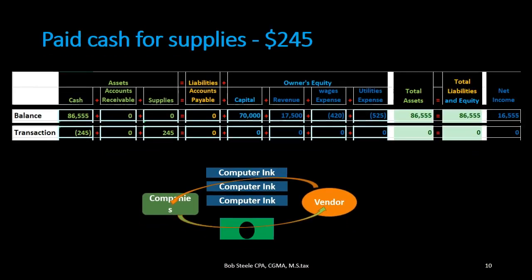This is an unusual transaction in that we have one side of the equal sign both going down and going up. People are often thrown off because when asked about the effect on the accounting equation they want to say cash is decreasing assets, but we have to remember the other side is increasing assets — so there's no net effect on assets. Even though a transaction is happening, there's no net effect on assets, liabilities, or equity, and no impact on net income.